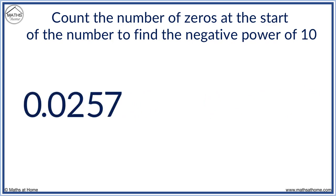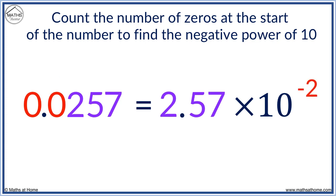Here is 0.0257. We write it as a number between 1 and 10, so we have 2.57 times 10. And the power is negative, 1, 2. 0.0257 equals 2.57 times 10 to the power of negative 2.